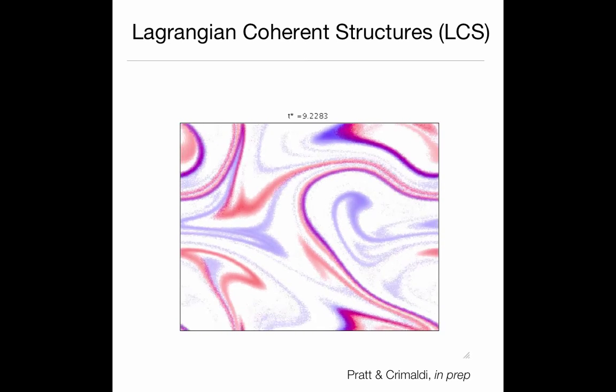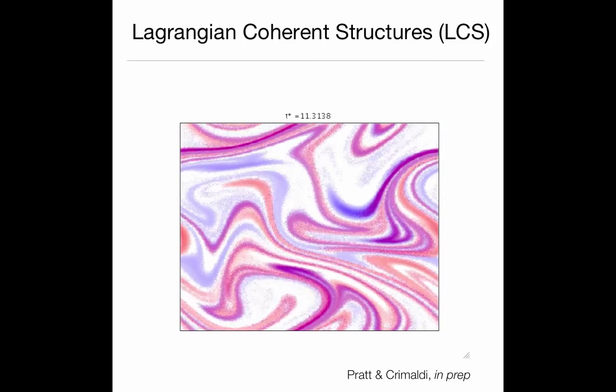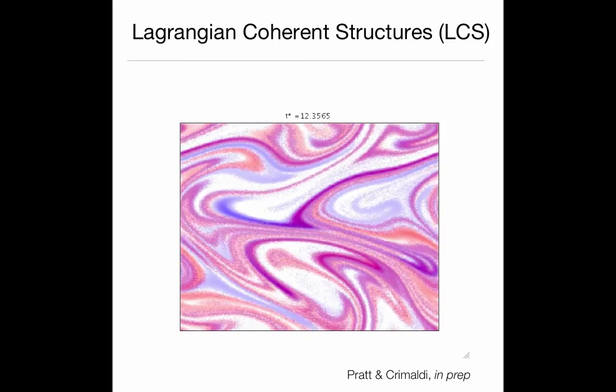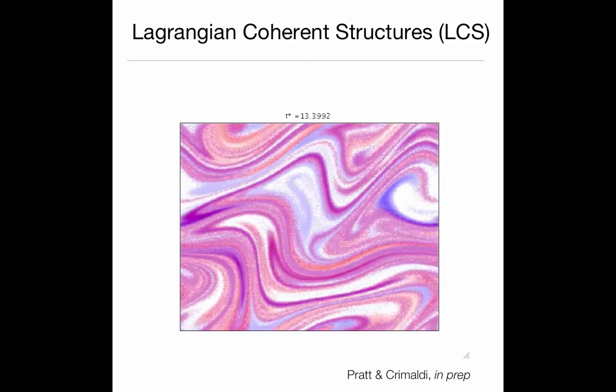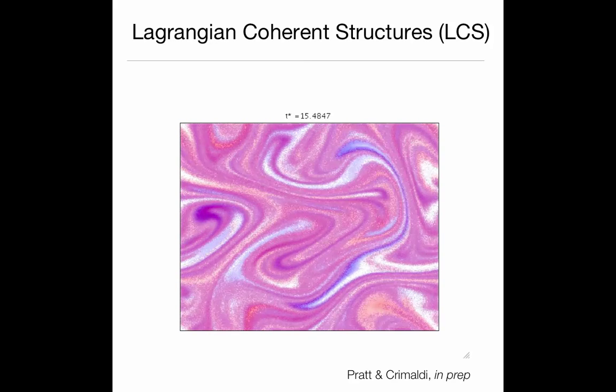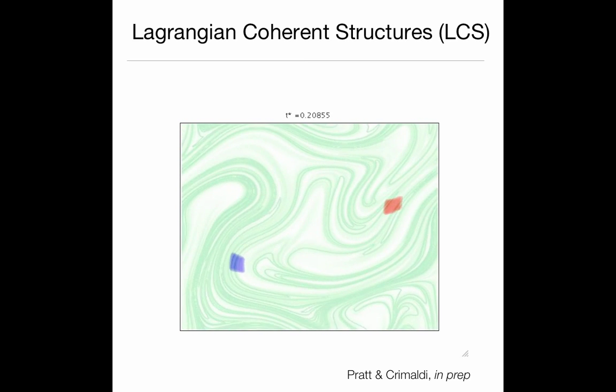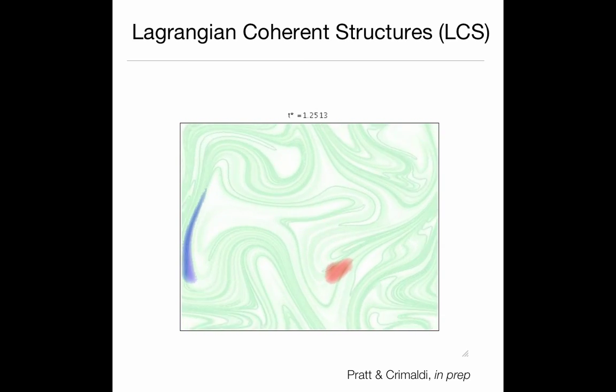But something really interesting and almost magical starts to happen is you start seeing this coalescence of red and blue filaments locally to now start forming these very localized purple filaments, which is where fertilization is taking place. And if I take this movie now, and I superimpose these two movies on top of one another, and now what we'll see, if we watch where those purple coalescent events take place, you'll see that they line up exactly with these Lagrangian Coherent Structures.